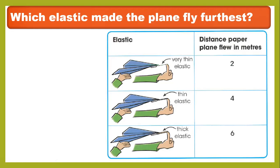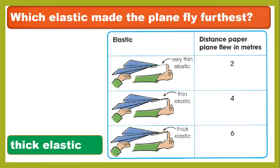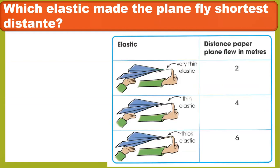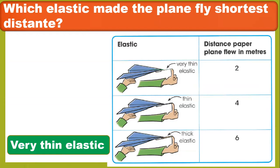We have the distance the paper plane flew in meters. You have to find out which paper plane flew furthest. The paper plane flies furthest with the thick elastic. When you stretch a very thin elastic it will break, and it can hurt you. After that, which elastic made the plane fly the shortest distance? It will be the very thin elastic.